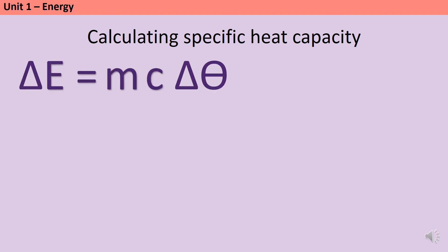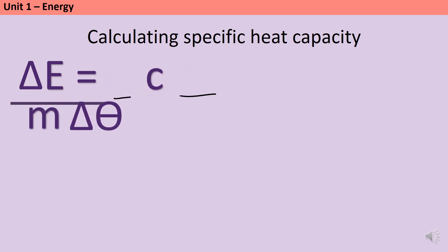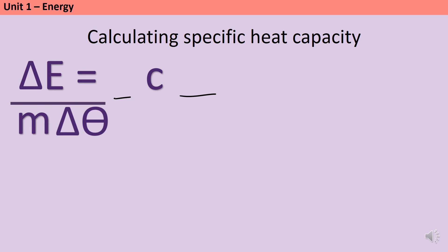If you're more comfortable rearranging the equation algebraically: starting from the initial equation, to get specific heat capacity on its own, you need to remove the mass term and the change in temperature term. They're currently multiplying, so to remove them you divide — and whatever you do to the right-hand side you also do to the left-hand side. This gives: specific heat capacity equals the change in energy divided by the mass multiplied by the change in temperature.